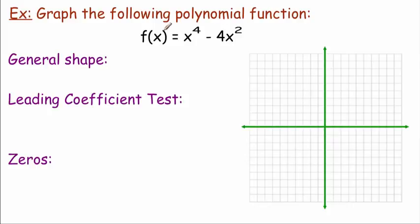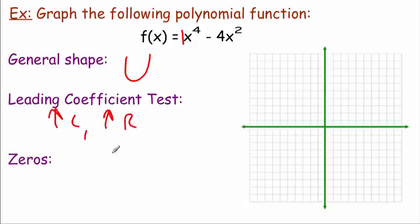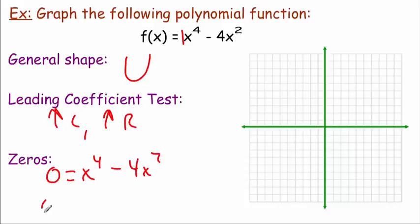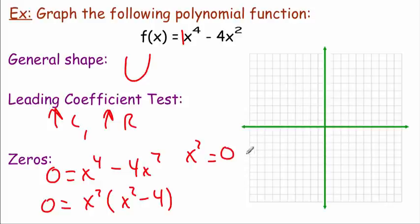Now we're looking at f(x) = x⁴ - 4x². The highest power is four, so this is going to look parabolic. The implied leading coefficient is positive one, so since it's parabolic with a positive coefficient, it goes up to the left and up to the right. To find the zeros: zero = x⁴ - 4x². I see a GCF of x², giving us x²(x² - 4). Setting x² = 0 gives x = 0 — this is repeated with even multiplicity, so the graph just barely touches at zero without crossing.